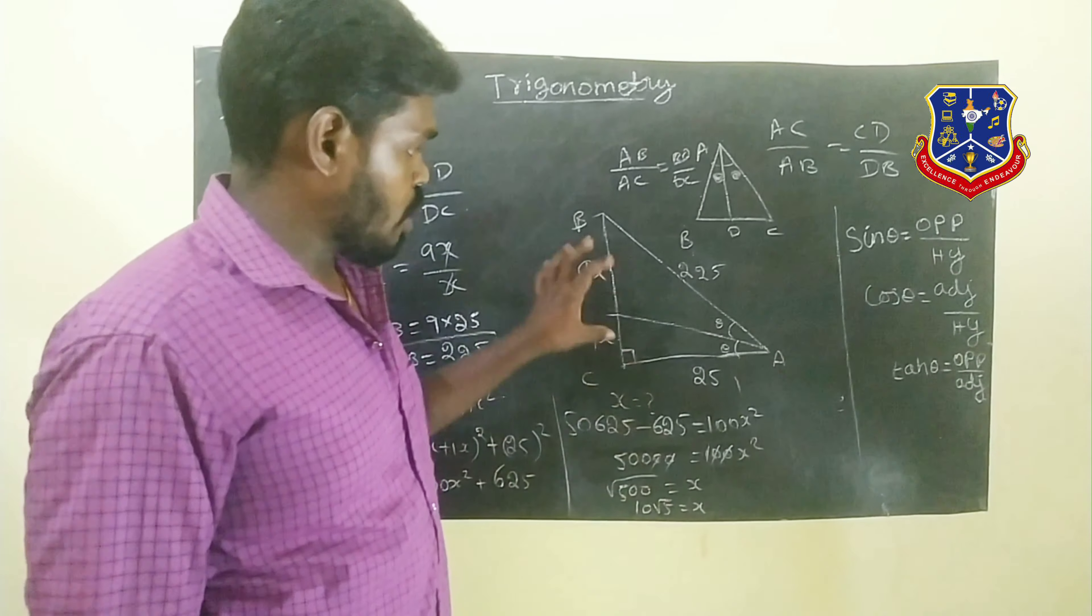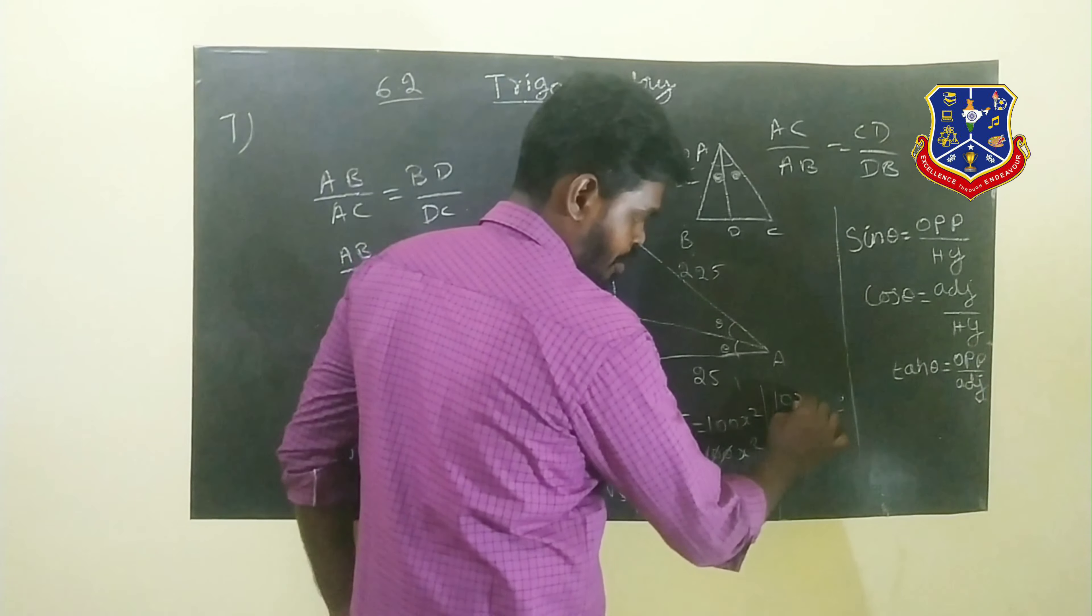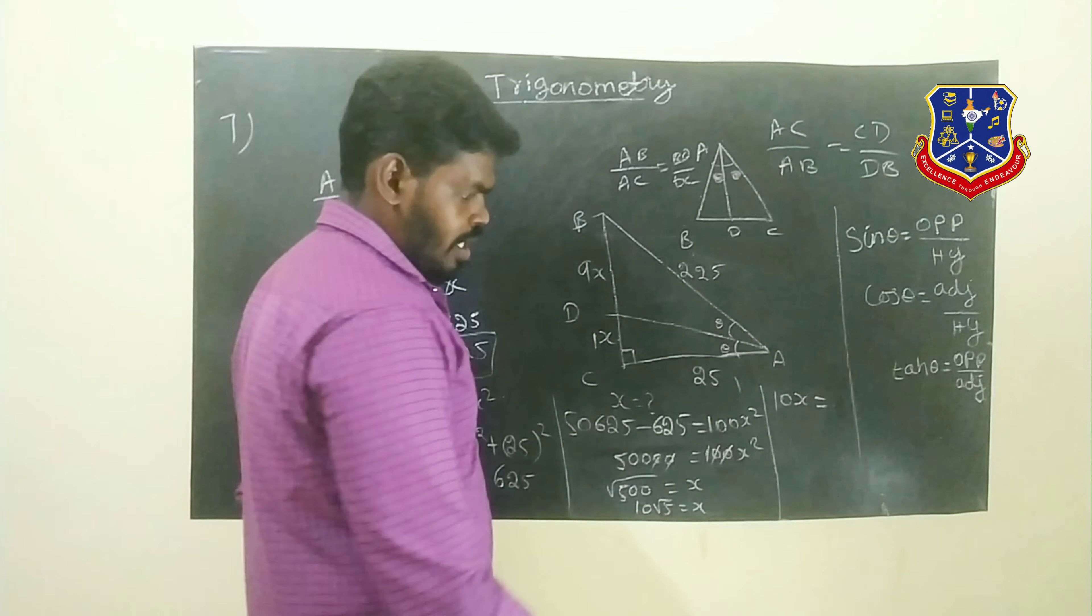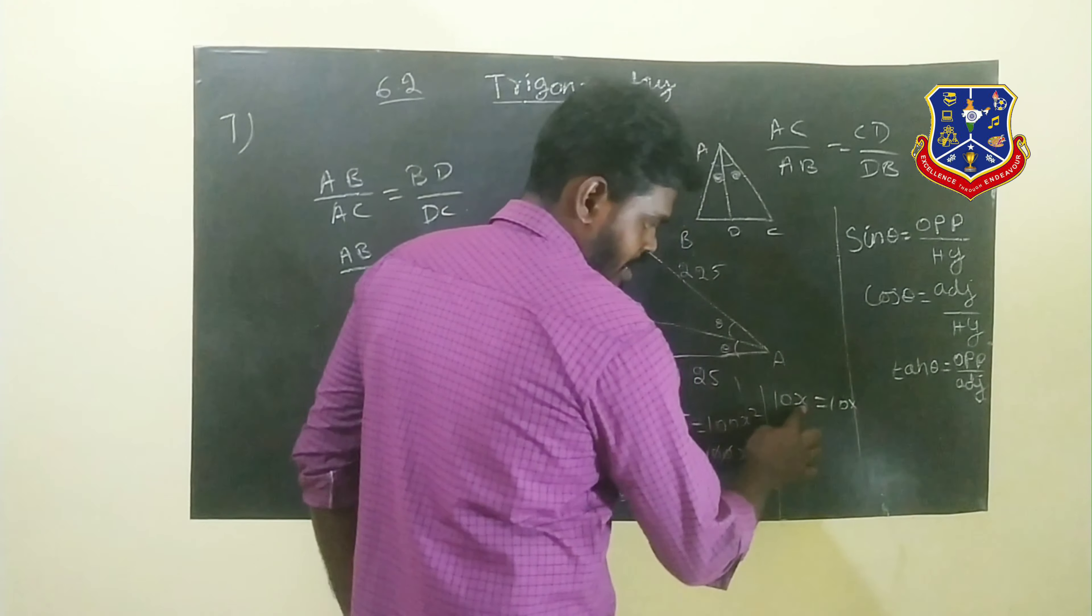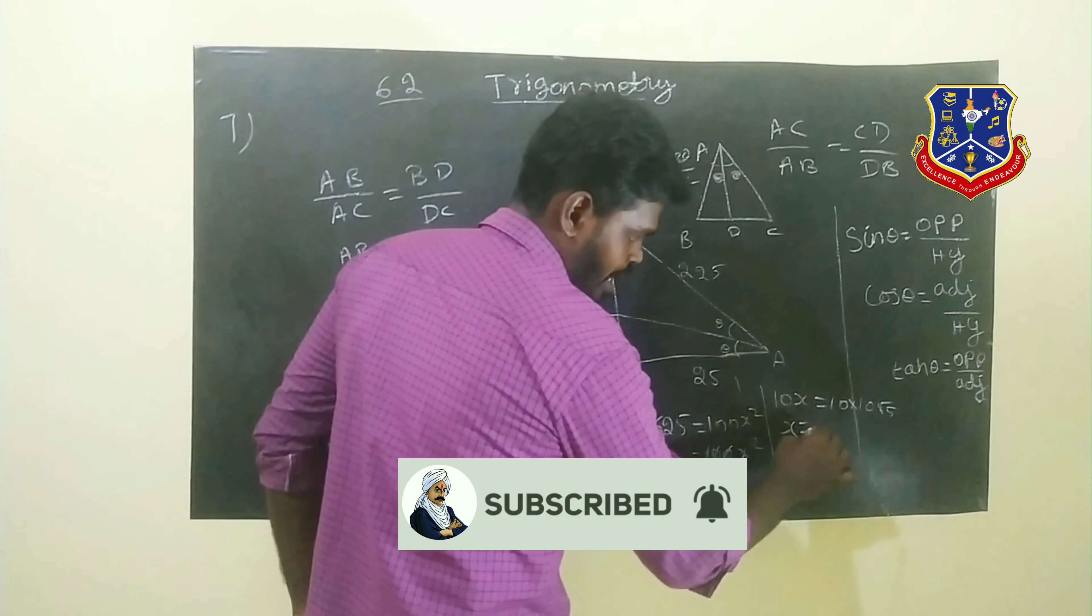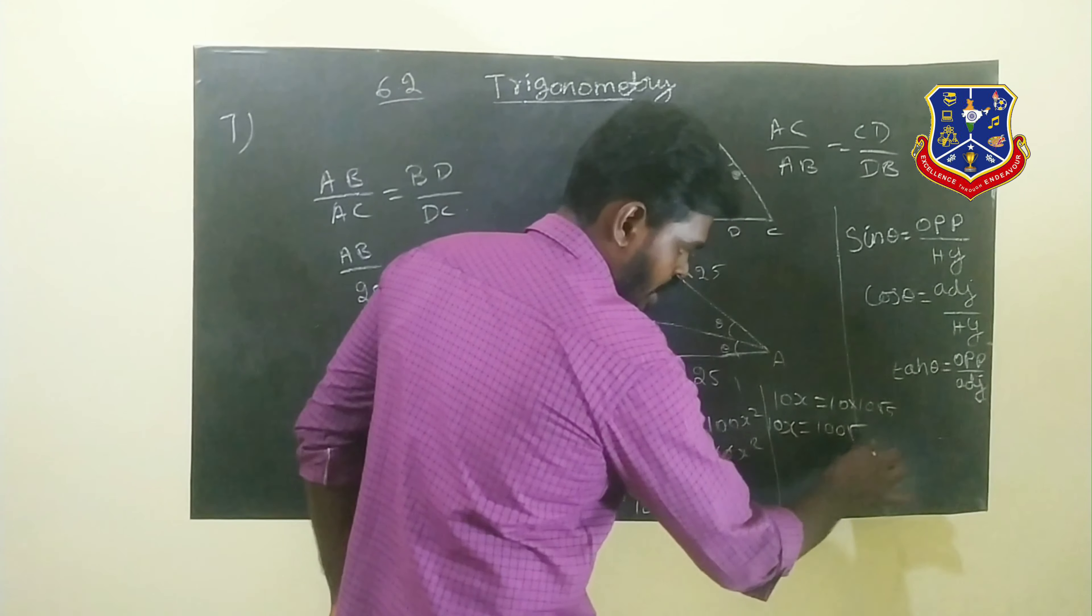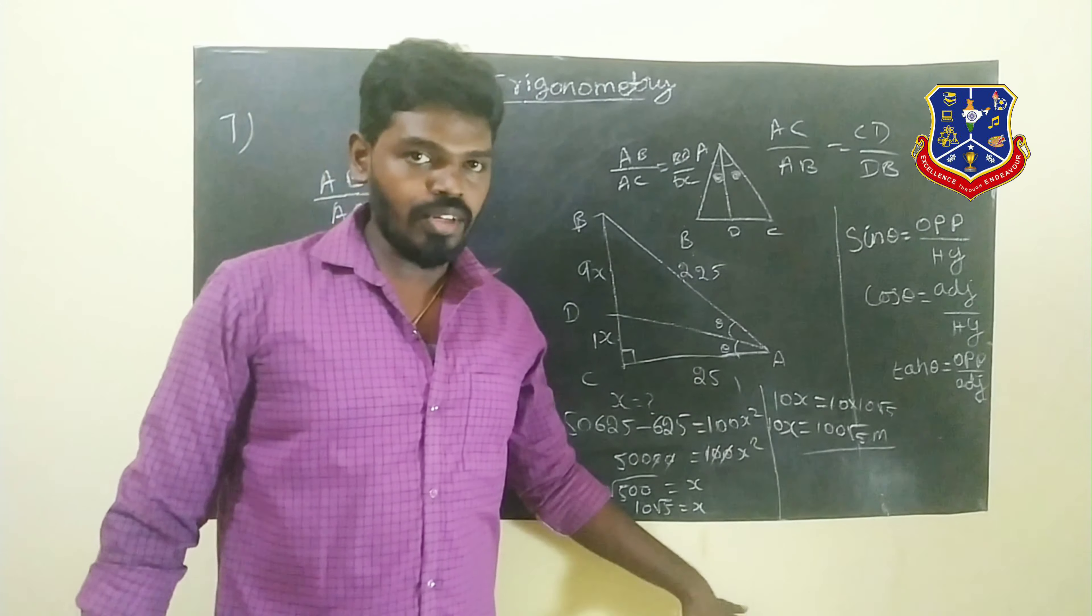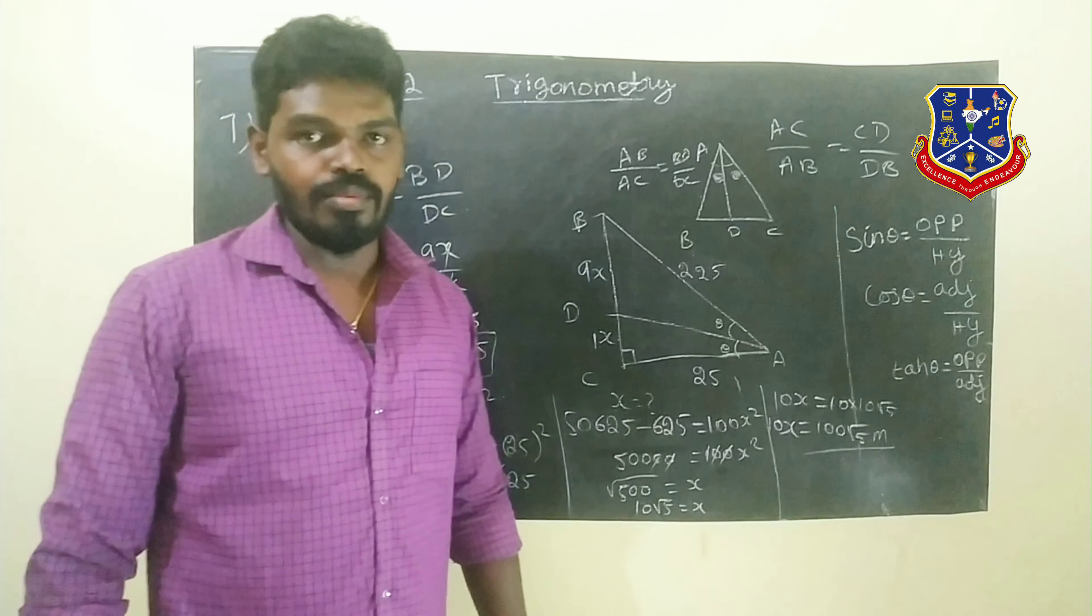Now we find the x value. What is the pole height? The pole height is 10x, which is 9x plus 1x. We substitute x equals 10 root 5, so the pole height equals 10 times 10 root 5, which equals 100 root 5.